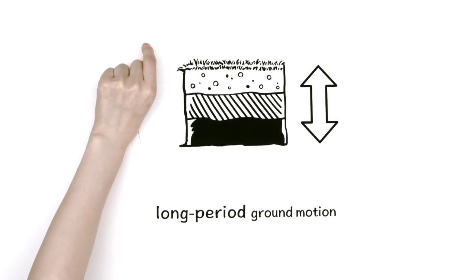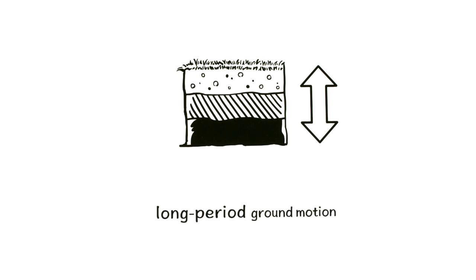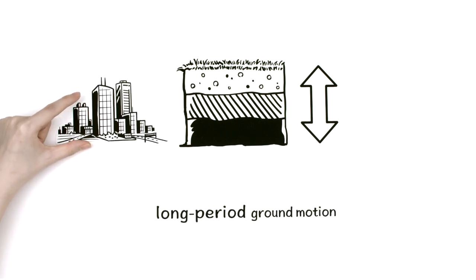The thicker the ground's sedimentary layers, the longer the period. Because cities are usually built on planes composed of very thick sedimentary layers, they often experience long period ground motion.